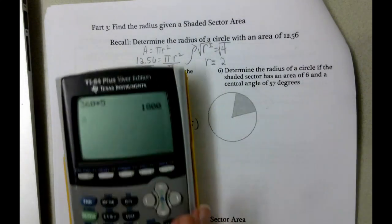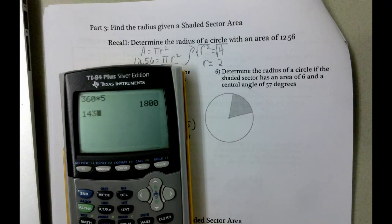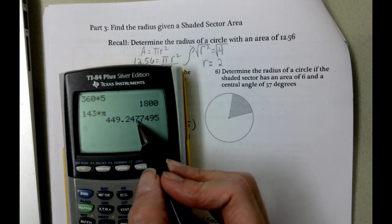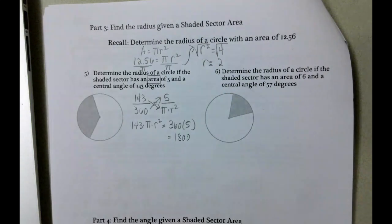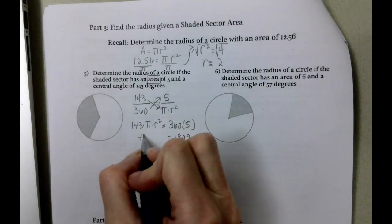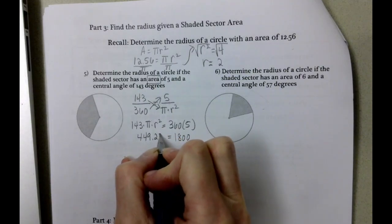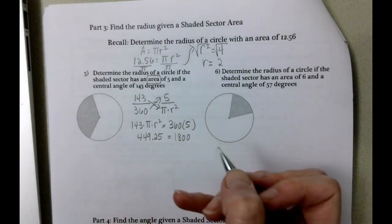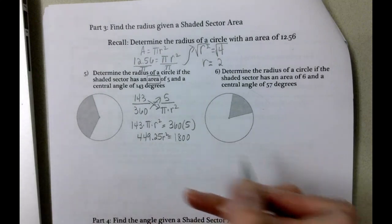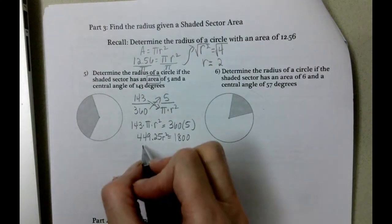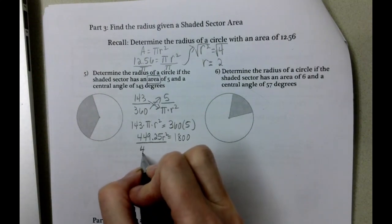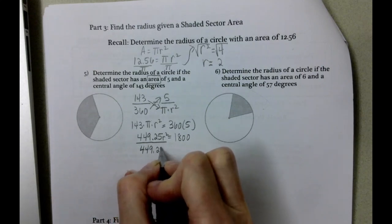And over here 143 times pi. This is 449.25. We're looking at the 7 to round. So 449.25 - the 7 was 5 or higher so we had to round up. Don't forget our r squared in there. We're going to divide both sides by 449.25.